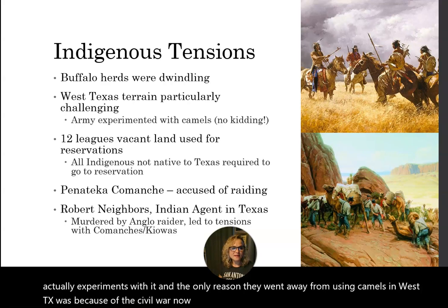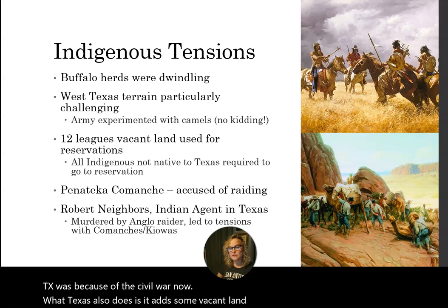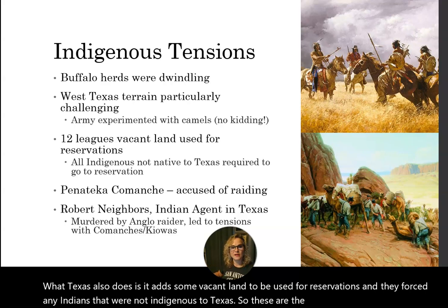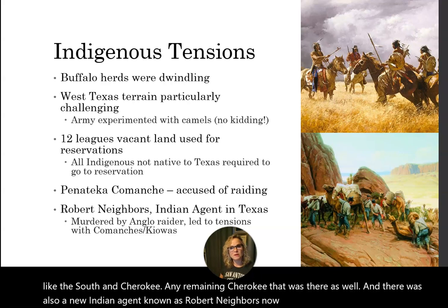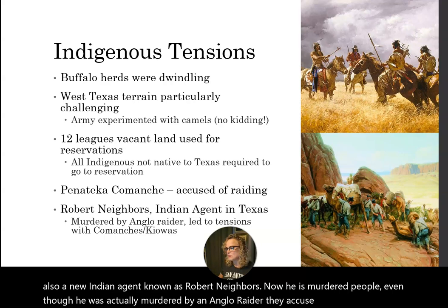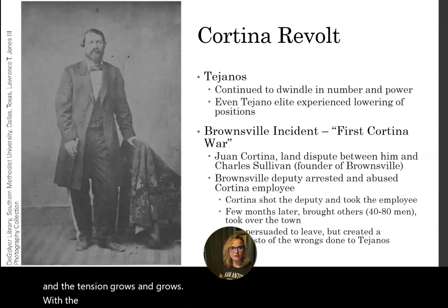Texas also added some vacant land to be used as reservations and forced any Indians not indigenous to Texas — including remaining Cherokee who had been pushed out of the South — onto those reservations. There was also a new Indian agent known as Robert Neighbors. He was murdered by an Anglo raider, but indigenous people were accused of this, and tensions with the Comanche continued to grow.